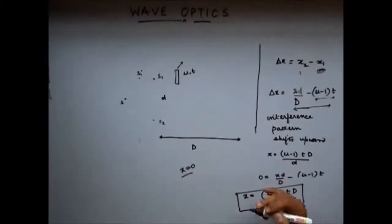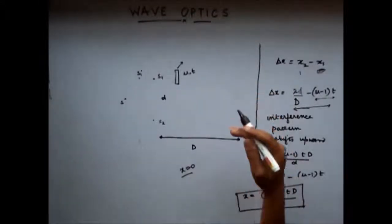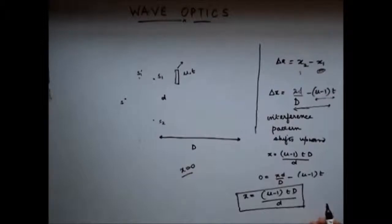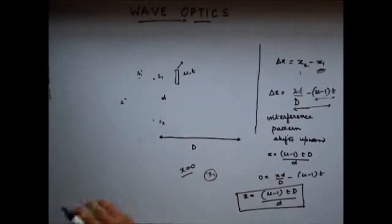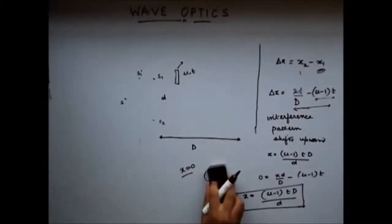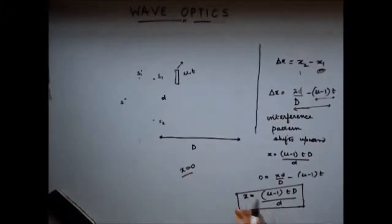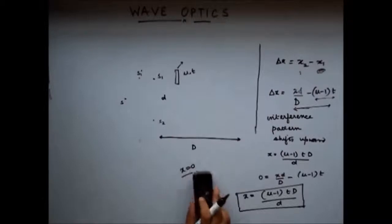The whole interference pattern has shifted upwards by this amount. Because this was the first maxima, the second maxima will be equal to the point where the first maxima occurred without the YDSE setup, plus this amount of distance. So the whole interference pattern has shifted upward.